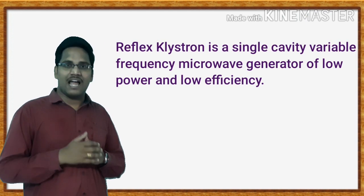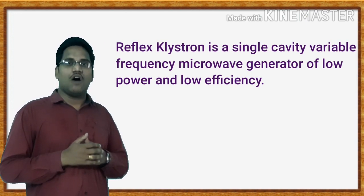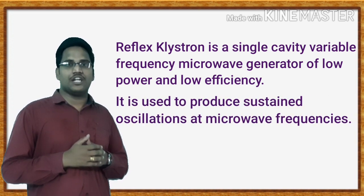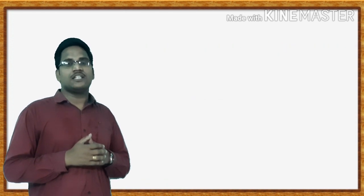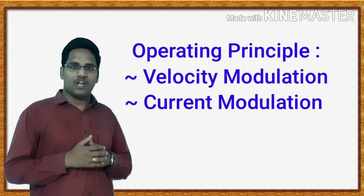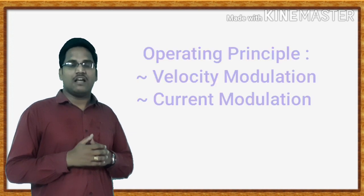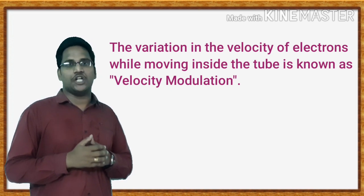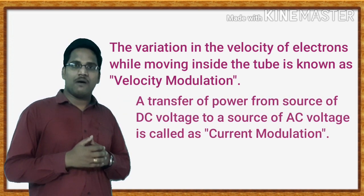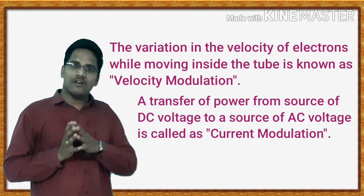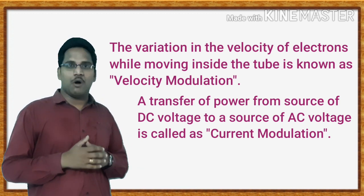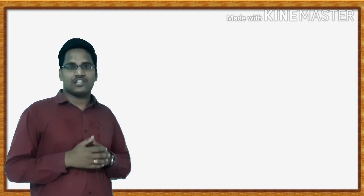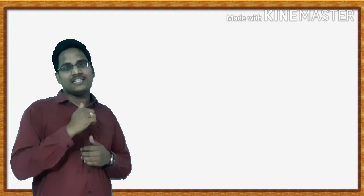The Reflex Klystron is a single-cavity variable-frequency microwave generator of low power and low efficiency, and it is used to produce sustained oscillations at microwave frequencies. Its principle of operation is velocity modulation and current modulation. The variation in the velocity of electrons while moving inside the tube is known as velocity modulation. A transfer of power from a source of DC voltage to the source of AC voltage is called current modulation. Now we will discuss the working of the Reflex Klystron, but first let us see how it is constructed.